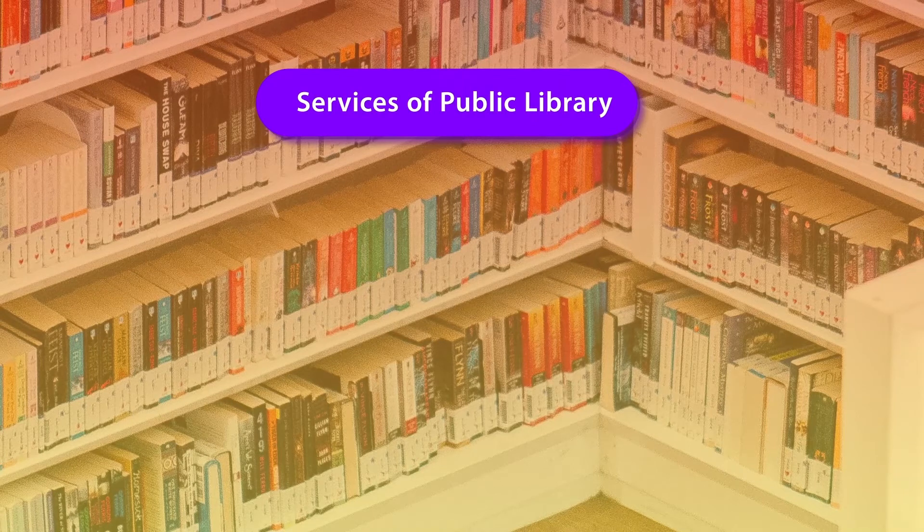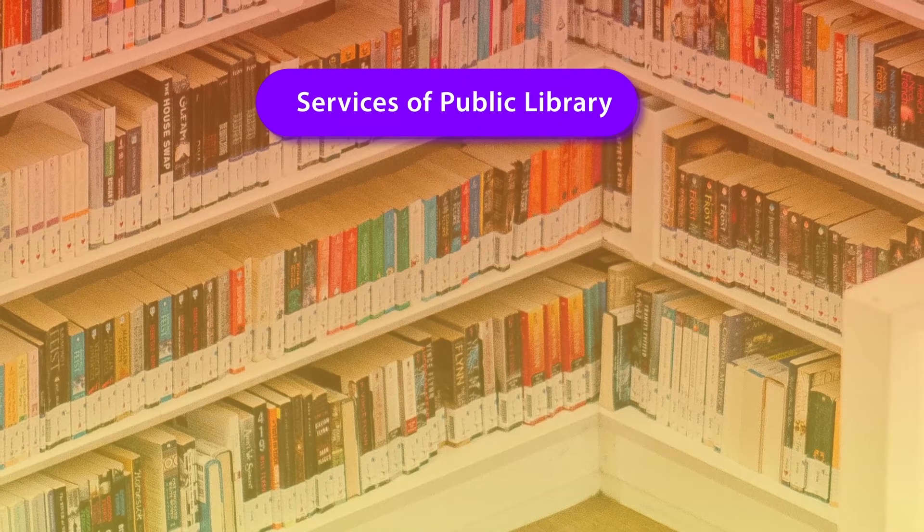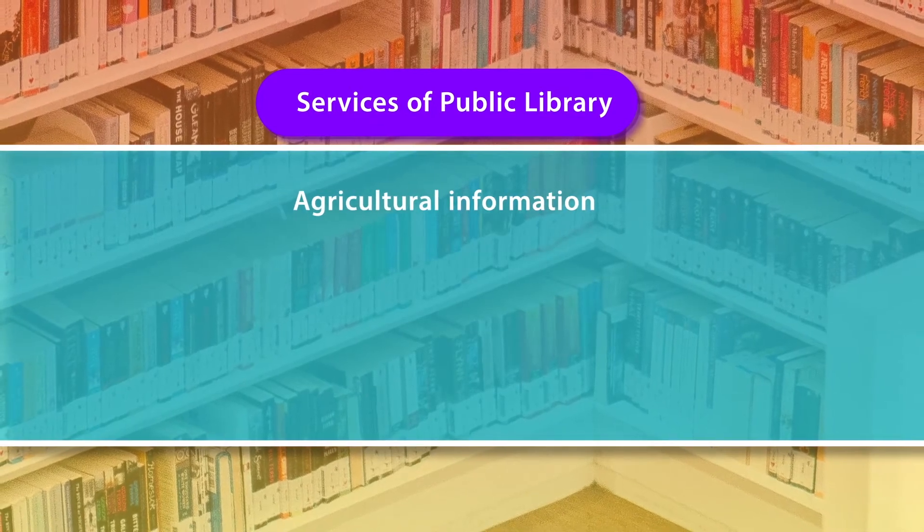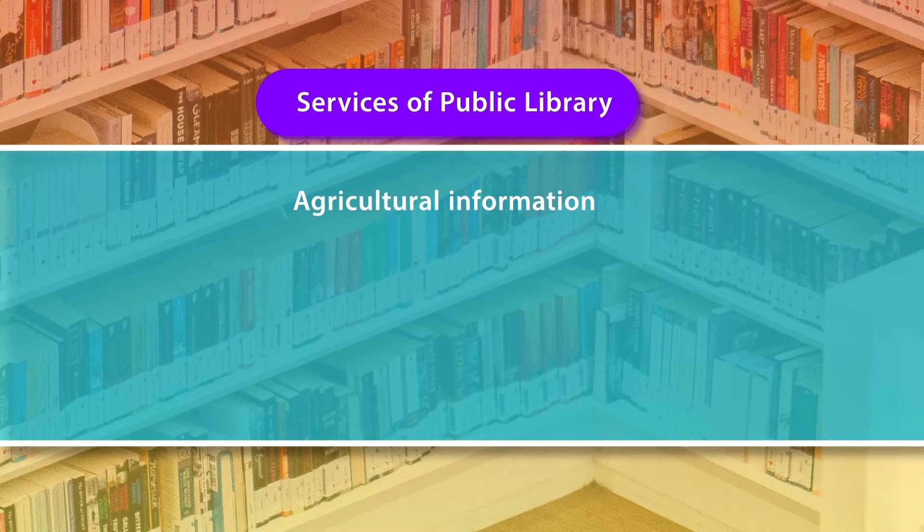Public libraries provide a variety of information to users, such as agriculture information related to crops, markets, and farming needs of farmers. In this way, public libraries work as community information centers. For example, if it is a block or panchayat level library, it provides information to farmers, organizing lectures and informational programs for concerned users.